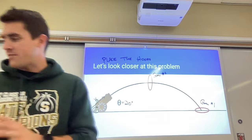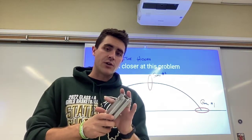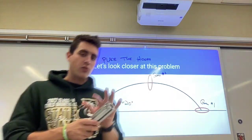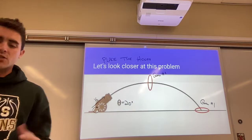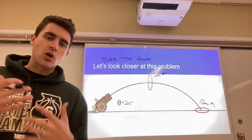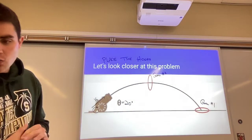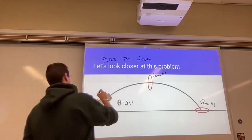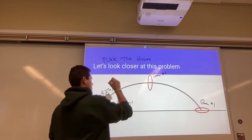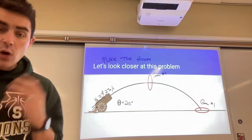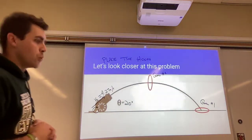One major idea to consider: because I already know the initial velocity of this launcher — even when it's pointed at 20 degrees — I can carry that over. I know my angle is 20 degrees, and from the previous horizontal challenge lab I know this launcher fires objects at 4.27 meters per second.